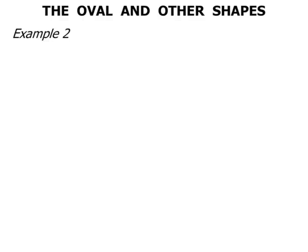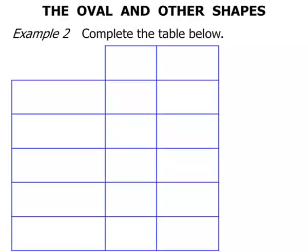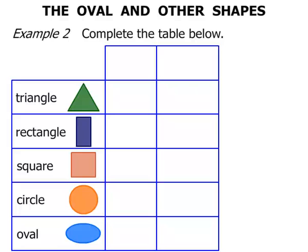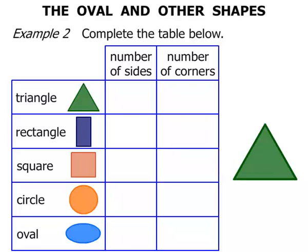Example 2 now. Complete the table below. So we have got a table with Triangle, Rectangle, Square, Circle, and Oval. We are going to be looking at the number of sides and also the number of corners. Let's take a look at the Triangle firstly. The number of sides — we need to count them: one, two, three. You probably already know that three is the answer. But what about the number of corners? One, two, three. So three sides and three corners.